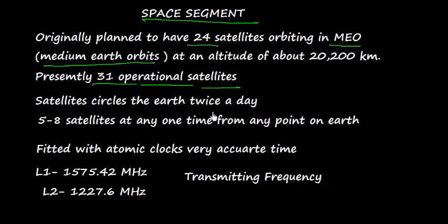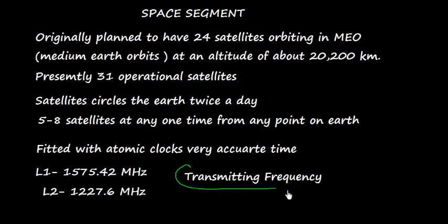The satellites circle the Earth twice a day. 5 to 8 satellites at any one time from any point on Earth can be seen. These satellites are fitted with atomic clocks which give very accurate time. The transmitting frequencies for these satellites are L1 and L2. L1 is 1575.42 MHz and L2 is 1227.6 MHz.